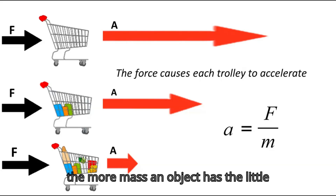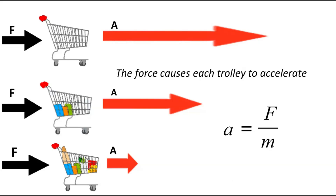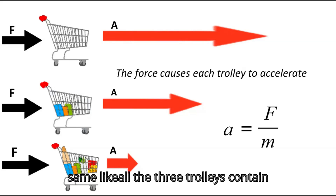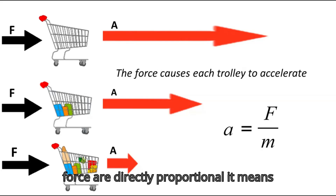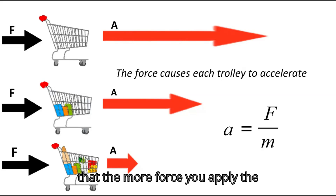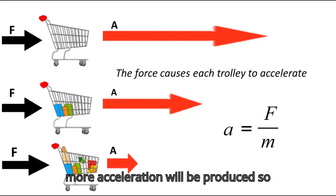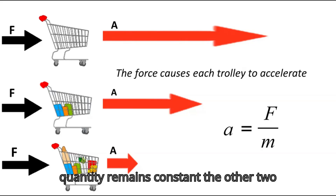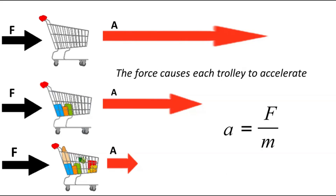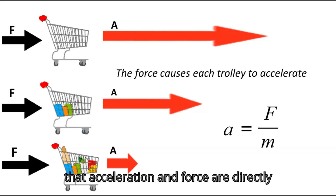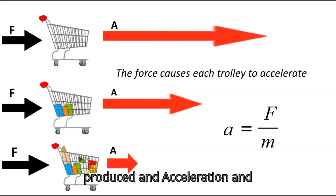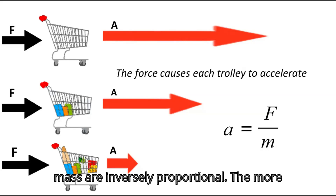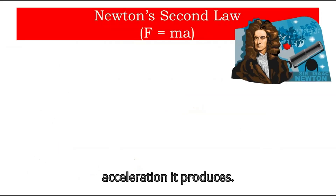We can say that acceleration is inversely proportional to mass — the more mass an object has, the less acceleration it produces, as force remains constant. However, if all trolleys have the same mass, then acceleration and force are directly proportional — the more force you apply, the more acceleration is produced. So acceleration and force are directly proportional, while acceleration and mass are inversely proportional.